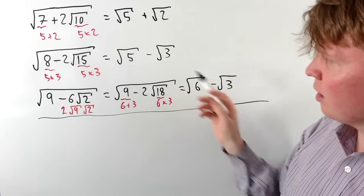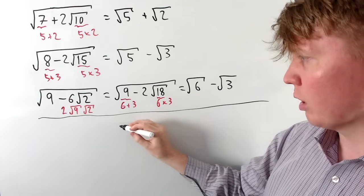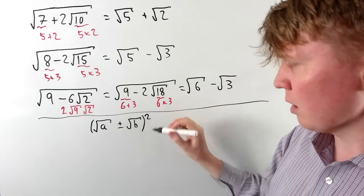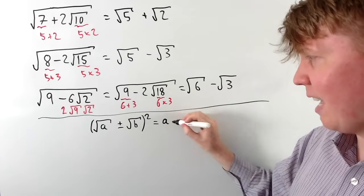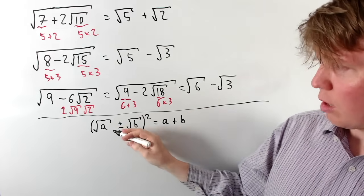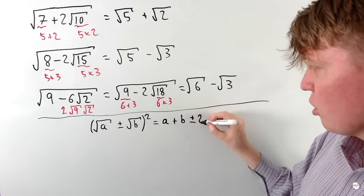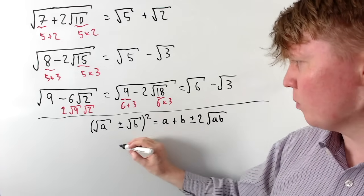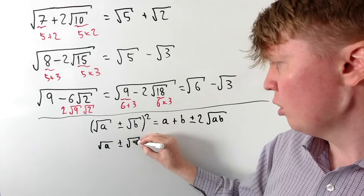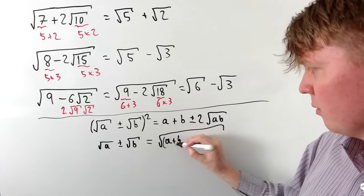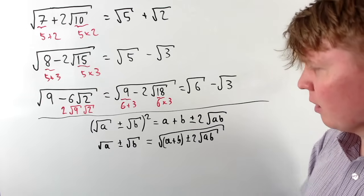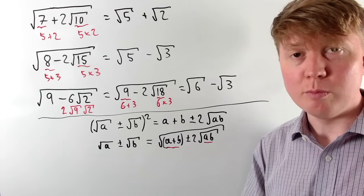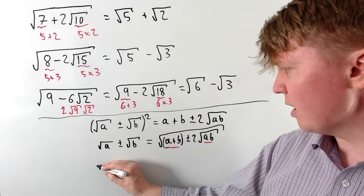I haven't really explained what's going on here, so let's work in reverse. We're looking for an answer of the form √a ± √b. Squaring this: (√a)² gives a, (√b)² gives b, and the cross term gives ±2√(ab). Taking square roots of both sides, we get √a ± √b = √(a + b ± 2√(ab)).